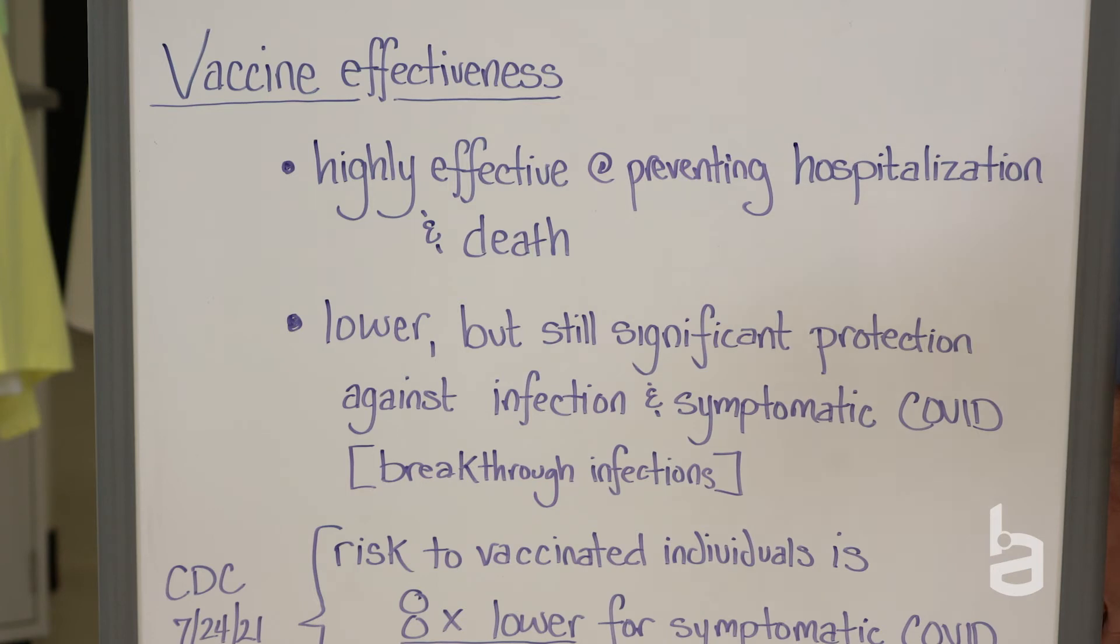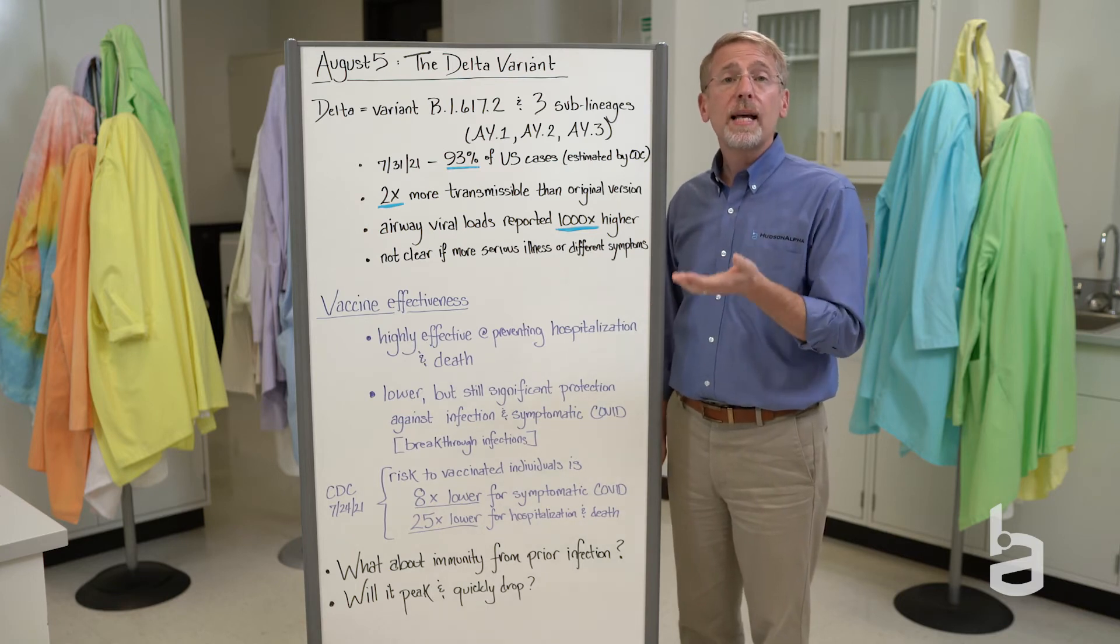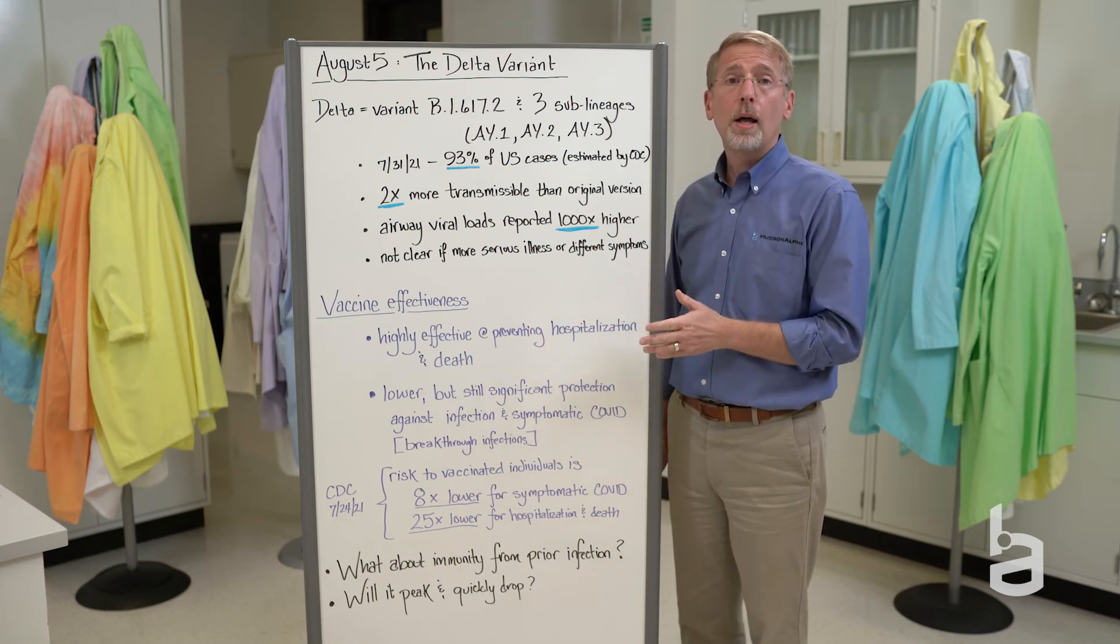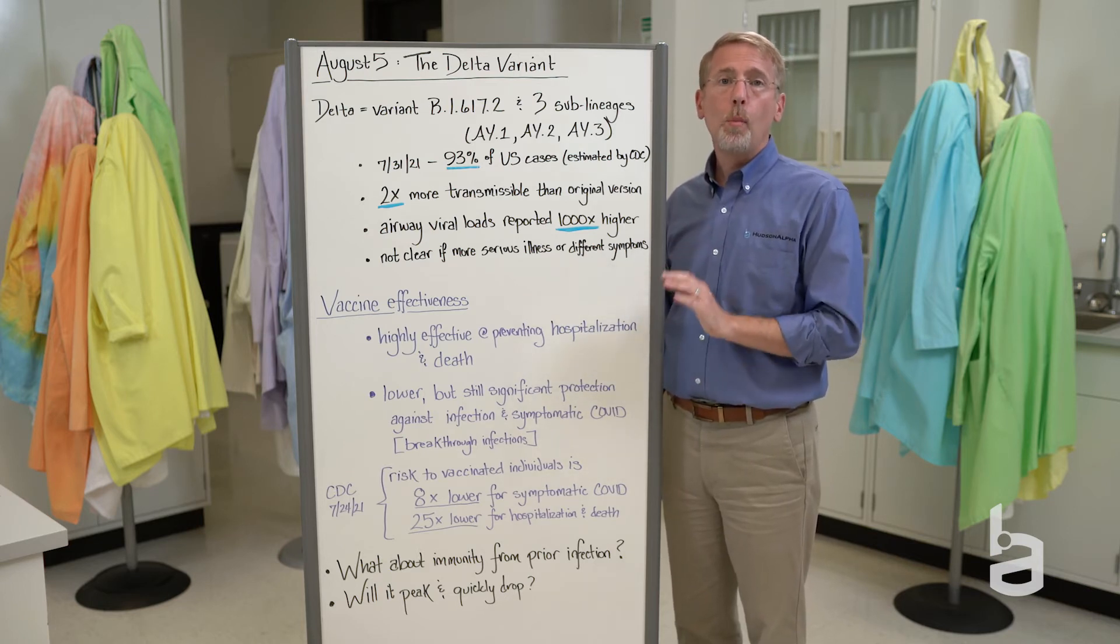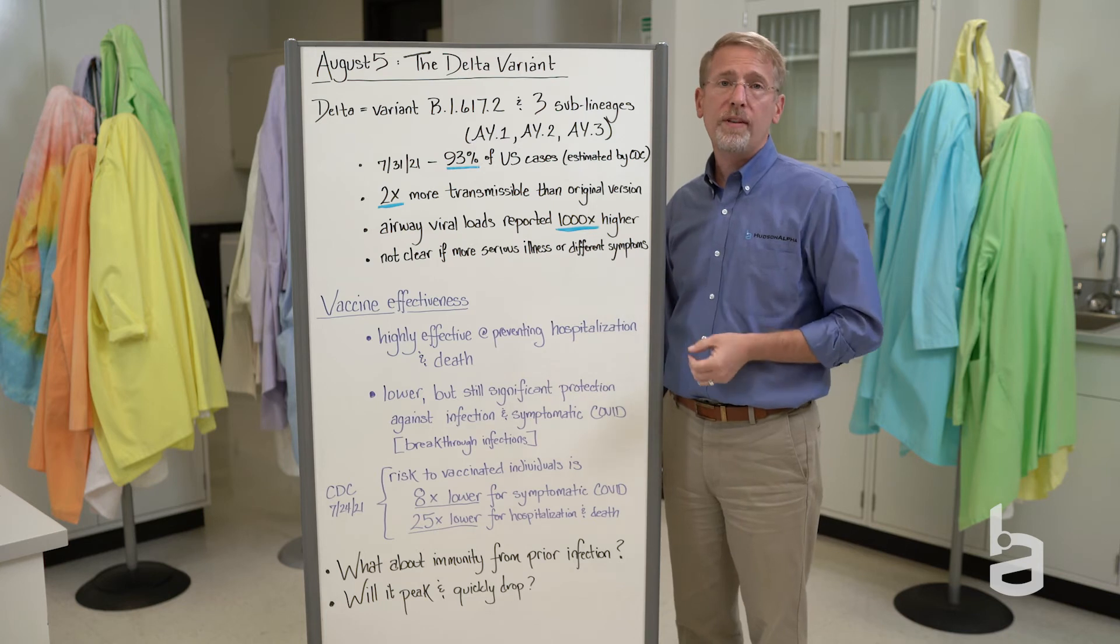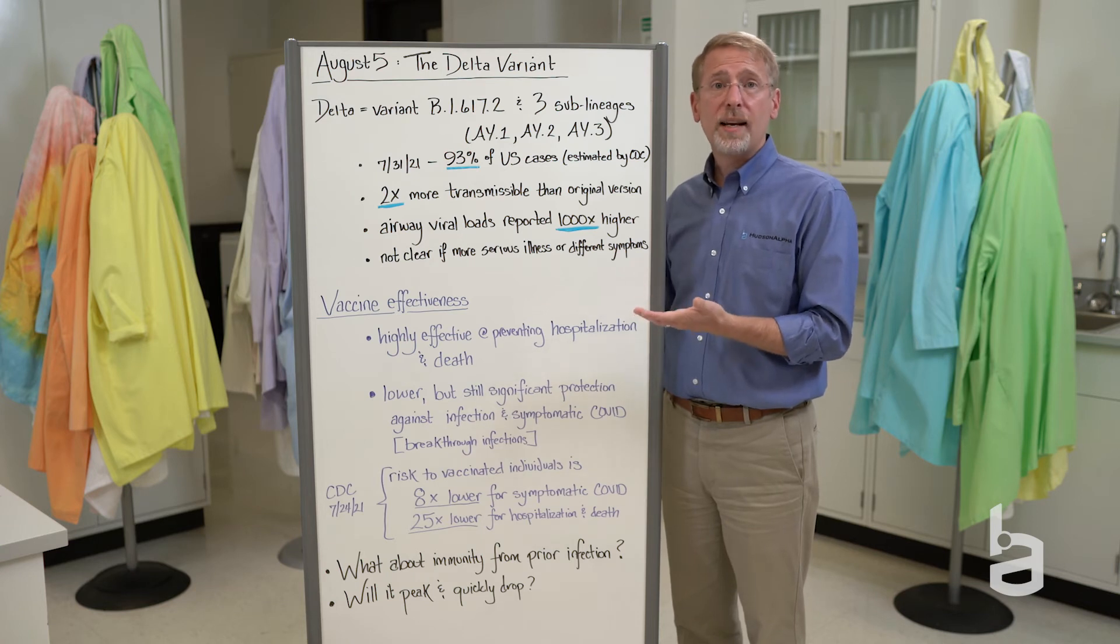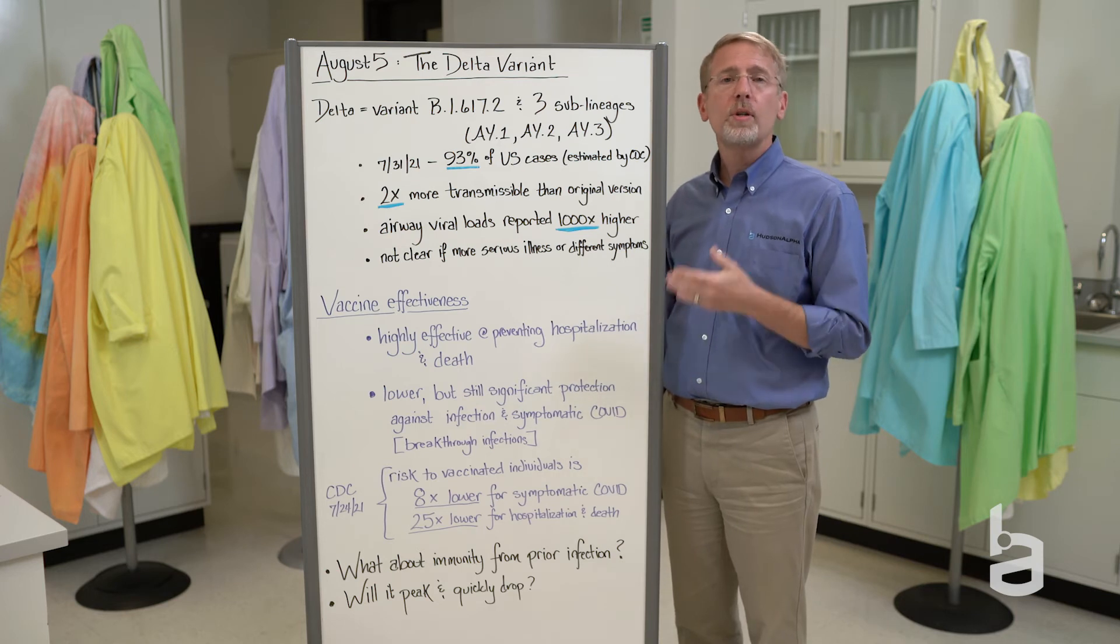Where this virus seems to have gained some traction is in its ability to infect individuals, even if they've been vaccinated. You're probably hearing about these breakthrough infections. These are people that have been vaccinated, have been exposed, and then test positive for the virus. In some cases, they even develop symptoms. Generally mild, but not always. The number of breakthrough cases is still a very small percentage of the overall individuals that have been vaccinated. But because you've got over 166 million people that have been vaccinated, even a small percentage of that feels like a much larger number. So it's important to keep that denominator in mind.